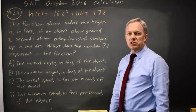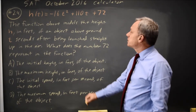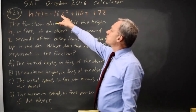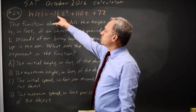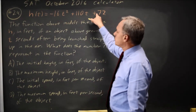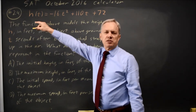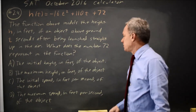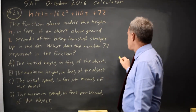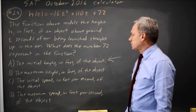Choice A is initial height, which would be the height at time 0. If you put 0 in for t, you get 0 plus 0 plus 72. So the height at time 0 — the initial height — is in fact 72. So that would be the correct answer.